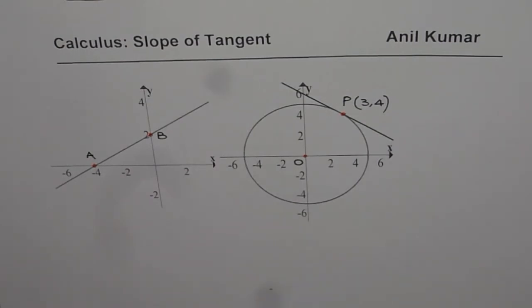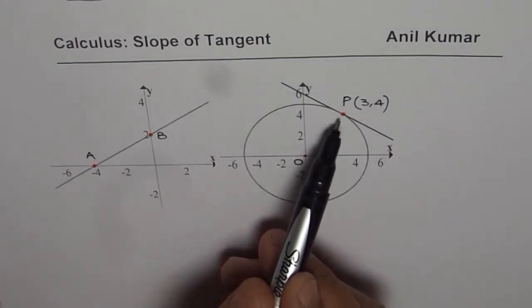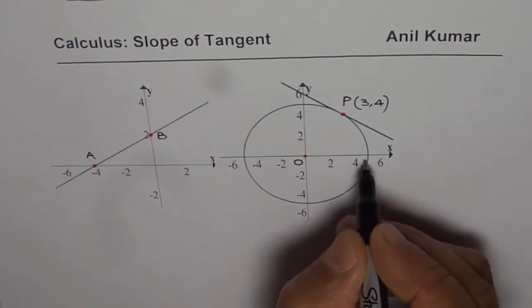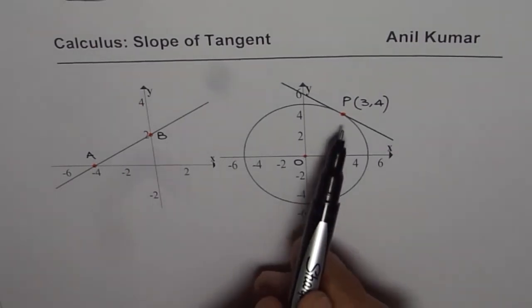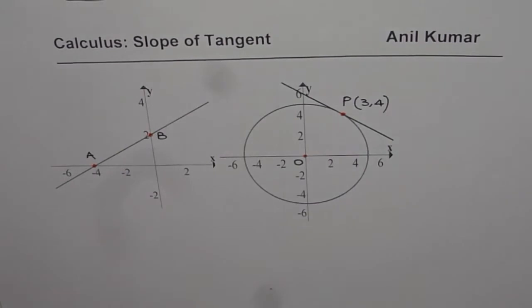Now here we also have a circle and on the circle I've drawn a tangent which passes through point P. P happens to be on the circle with radius of five units. Now the question for you is to find slope of this tangent line which goes through point P.